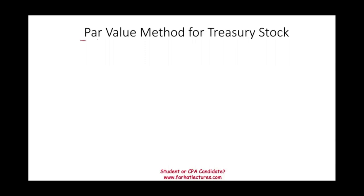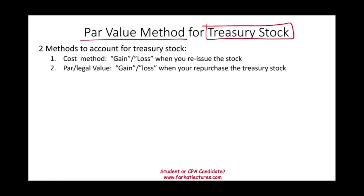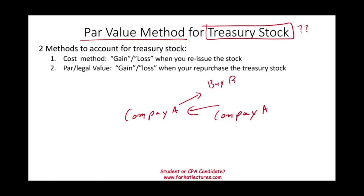Welcome to this session on the par value method for treasury stock. There are two methods to account for treasury stock: the cost method and the par value or legal method. Treasury stock is when the company buys back its own stock — for example, Company A buys back Company A stock. If a company buys other companies' stock, that's considered an investment. So there's an important difference between buying back your own stock and buying other companies' stocks.